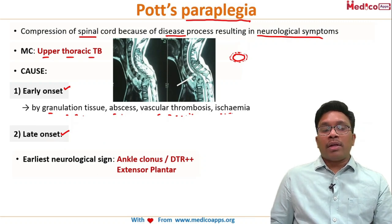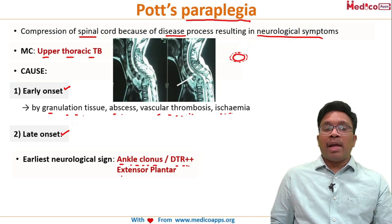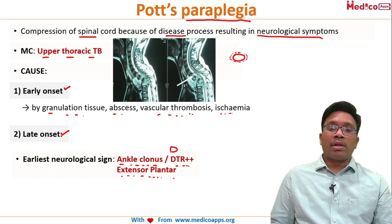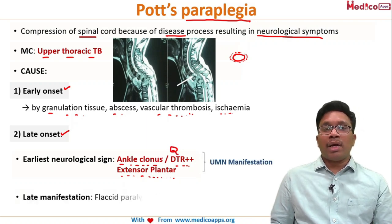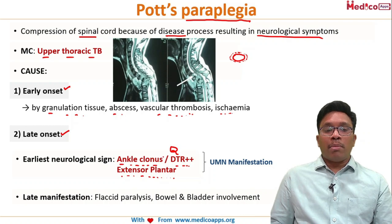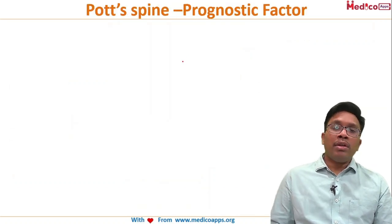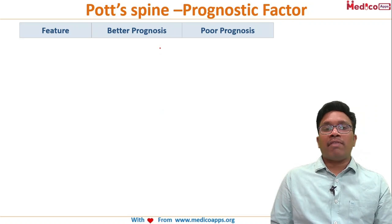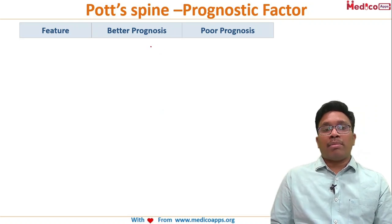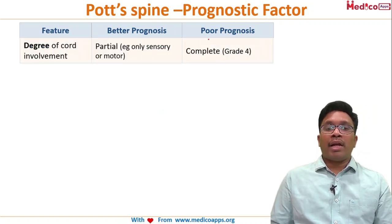The earliest neurological sign is ankle clonus, deep tendon reflexes, and extensor plantar reflex — these are upper motor neuron manifestations and are MCQ stars. Late manifestations include flaccid paralysis and bowel and bladder involvement.